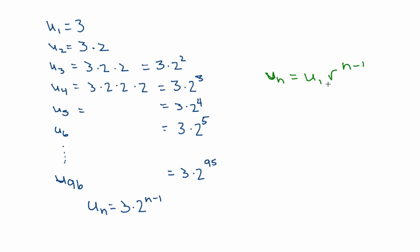And this formula here, Un equals U1 times R to the n minus 1, this is found in your formula book, and it is the general term for geometric sequences.